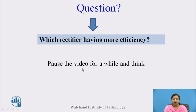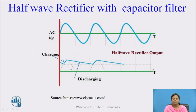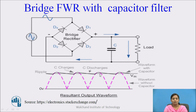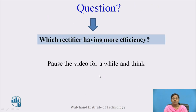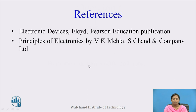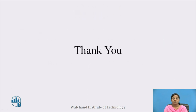Now, the question: which rectifier has more efficiency? We have studied the half-wave rectifier as well as the full-wave rectifier working with capacitor filter. From observation, we find that the full-wave rectifier has more efficiency than the half-wave rectifier. More ripple is removed by using the full-wave rectifier with capacitor filter, so it is more efficient than the half-wave rectifier with capacitor filter. These are the references. Thank you.